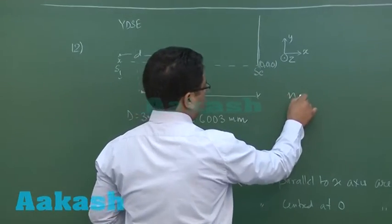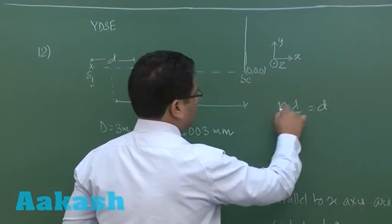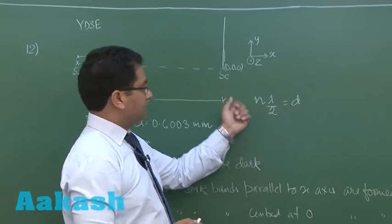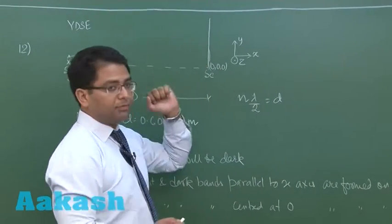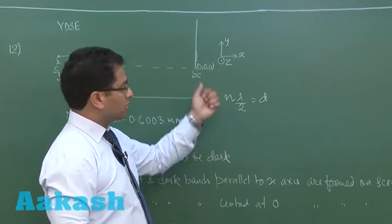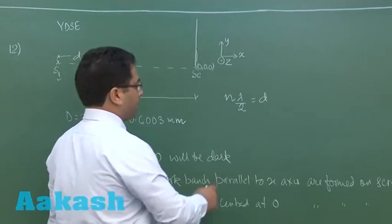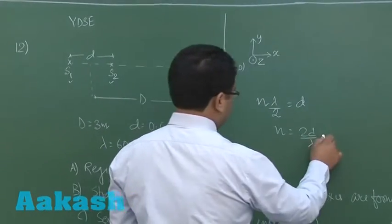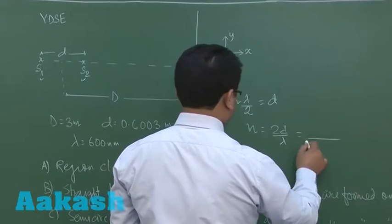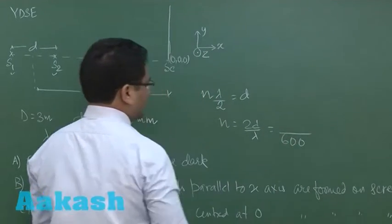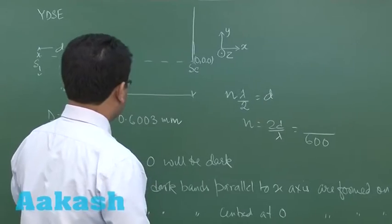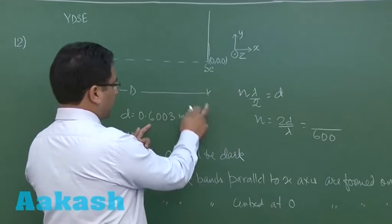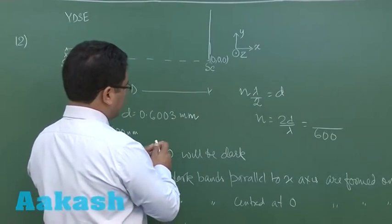Let's find the value of n for this given condition. If n is even, the point will have a bright band; if n is odd, the point will have a dark band. So n equals 2d divided by lambda. Here, lambda is 600 nanometers, and converting d into nanometers we multiply by 10 to the power 6.